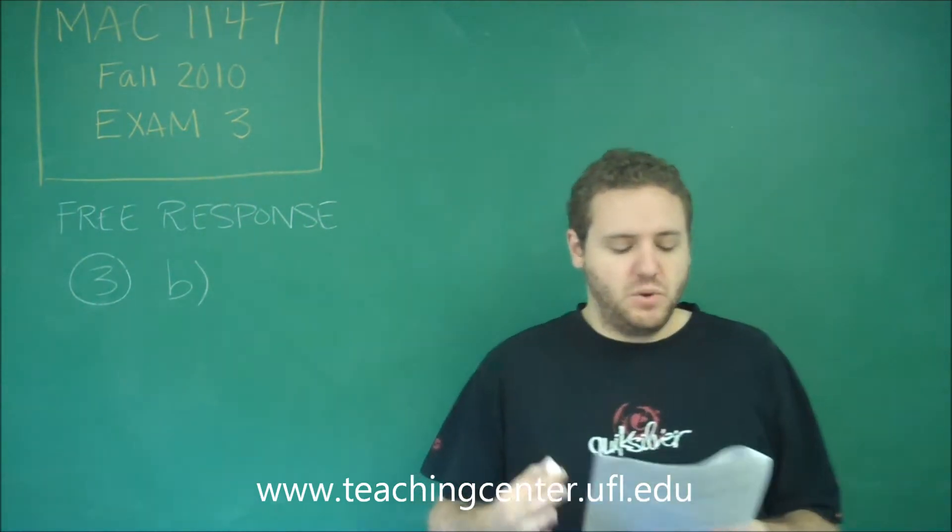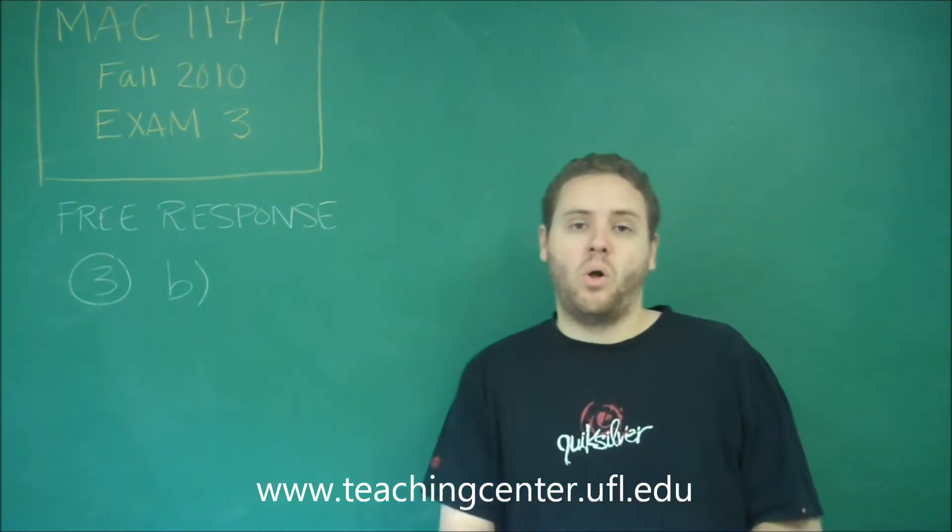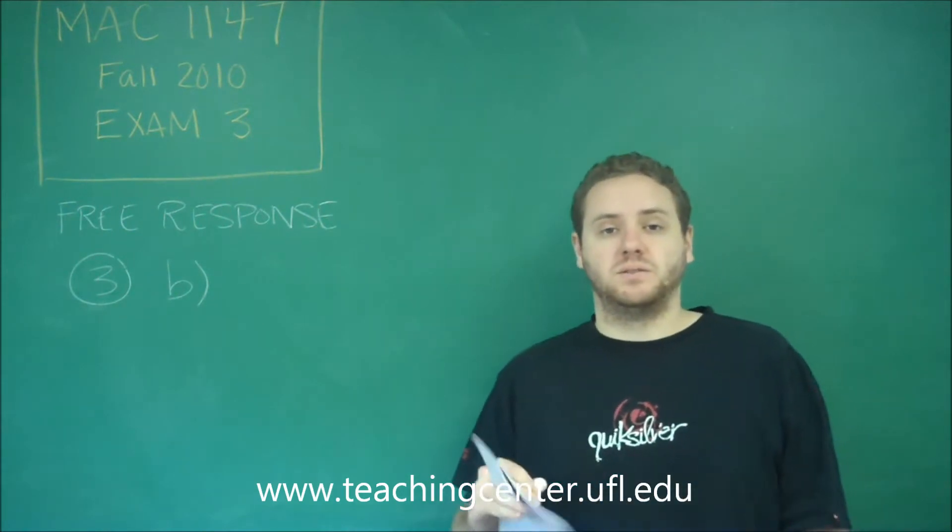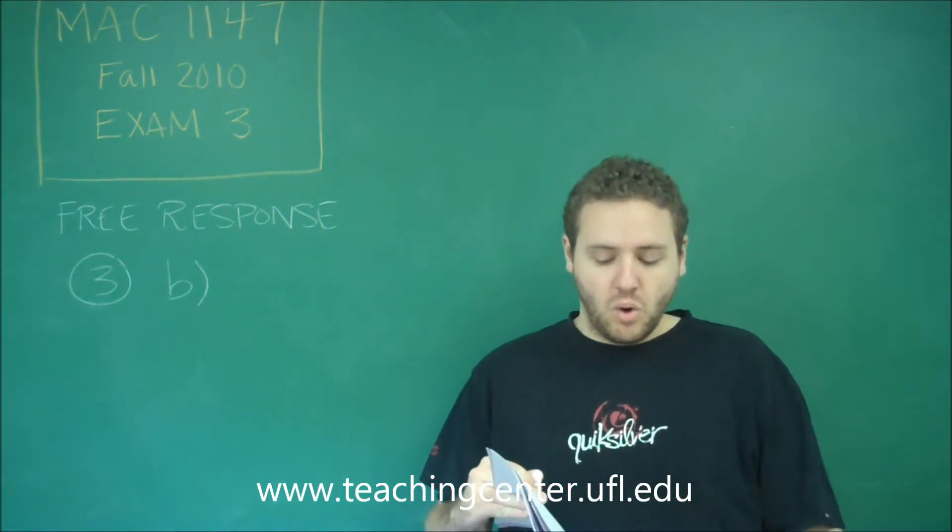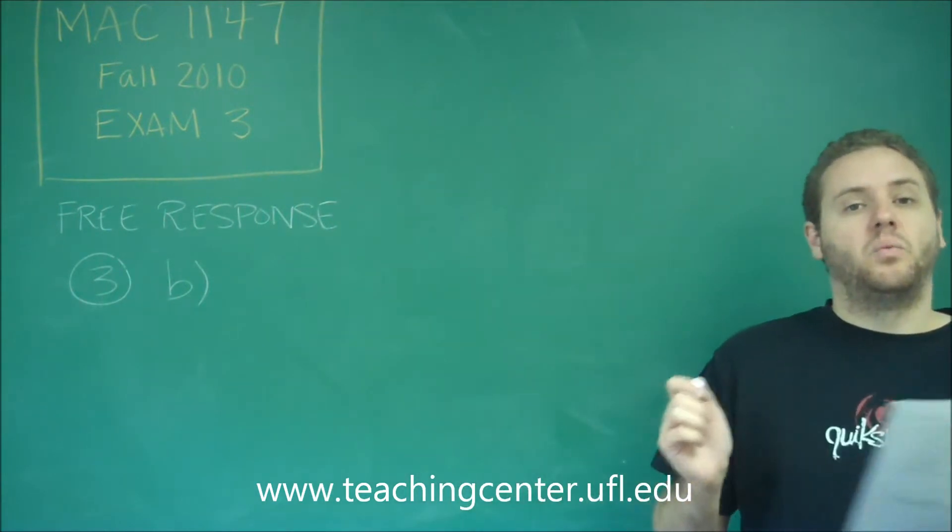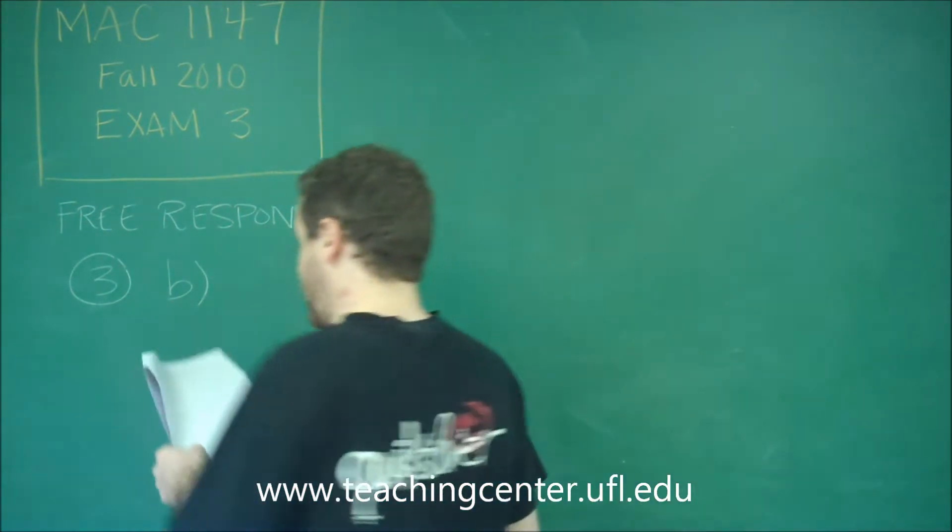Remember that if you have this, you do not want to cross multiply here. That will always have the potential of ruining some of your answers and you getting the problem wrong. What you want to do here instead is subtract 1 over so that 1 inside of the inequality is 0. You always want to do that.